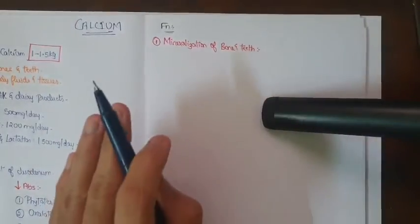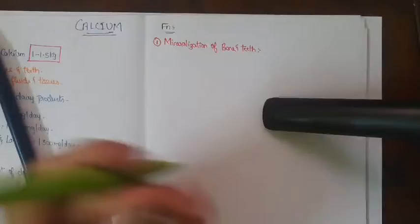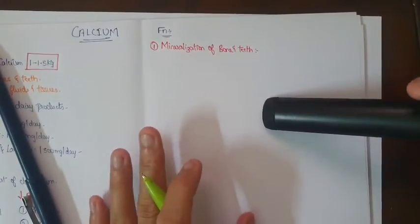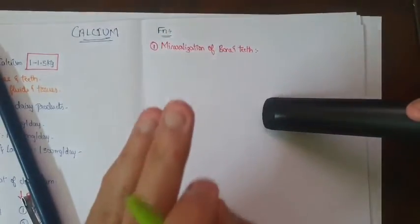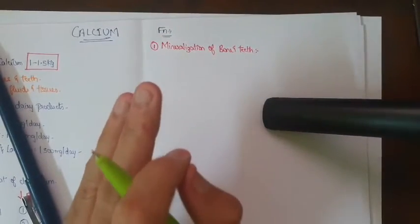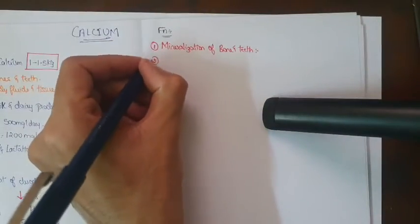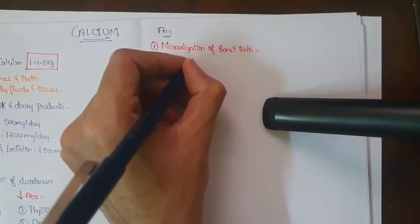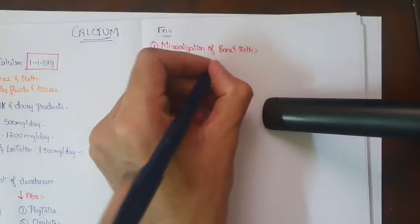Bone is nothing but a mineralized connective tissue and also contains an organic component — that is a collagen protein — as well as the inorganic component, that is the mineral component. Apart from that, you can also write about the coagulation — the next important function is the coagulation of blood.